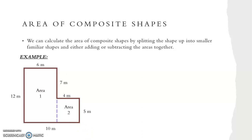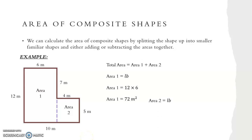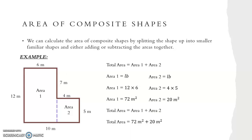The total area equals area one plus area two. Area one is a rectangle, so it's L times B: area one equals 12 times 6, which equals 72 metres squared. Area two is also a rectangle: area two equals 4 times 5, which equals 20 metres squared. To find the total area we add the two together: 72 metres squared plus 20 metres squared gives us a total area of 92 metres squared.